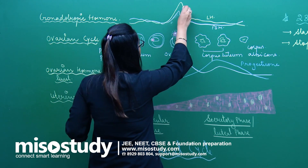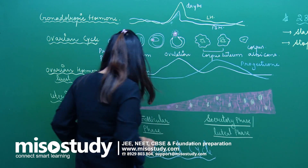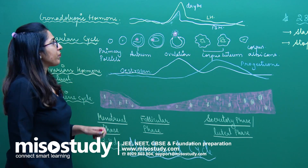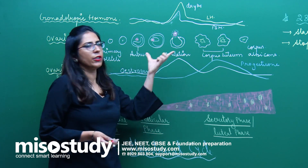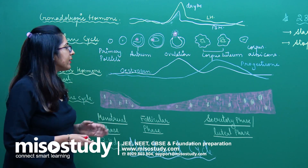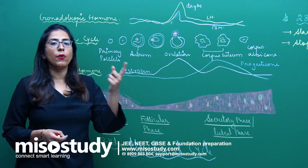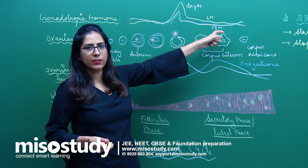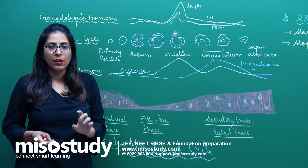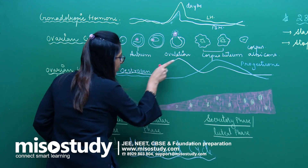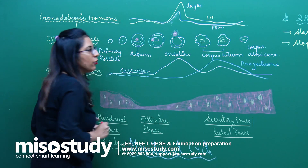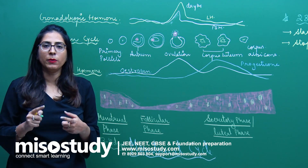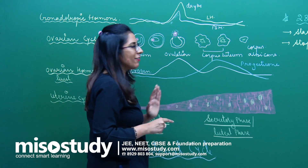At day 14, ovulation occurs. As ovulation proceeds and the follicles grow, there is simultaneously an increase in the concentration of estrogen. Estrogen is synthesized by the growing follicles. As estrogen concentration increases, it helps in the formation of the endometrium — it causes mitosis in the uterine lining so that endometrium formation can occur.